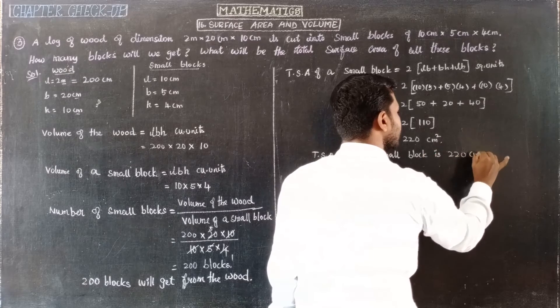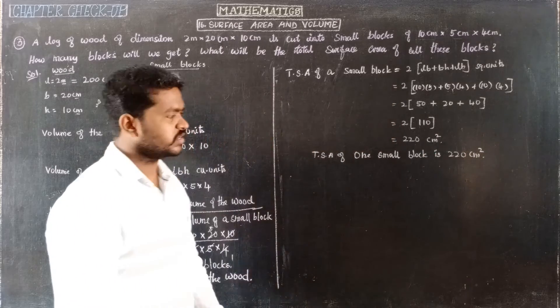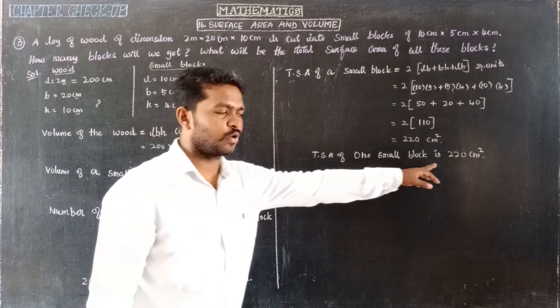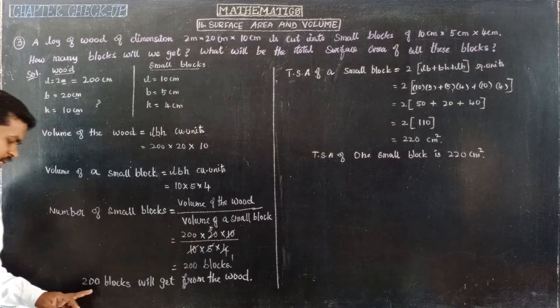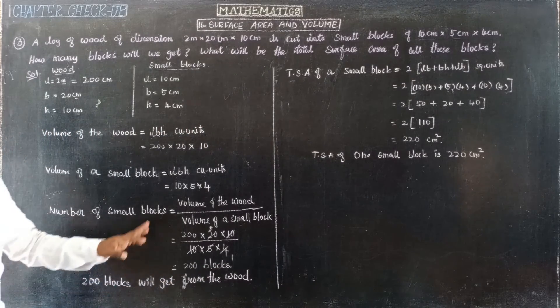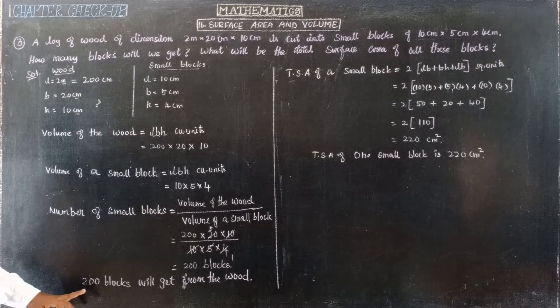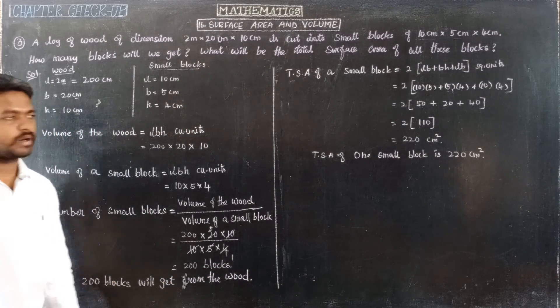One small block has a total surface area of 220 centimeters squared. There are 200 blocks in total, so we need to find the total surface area of all 200 blocks.